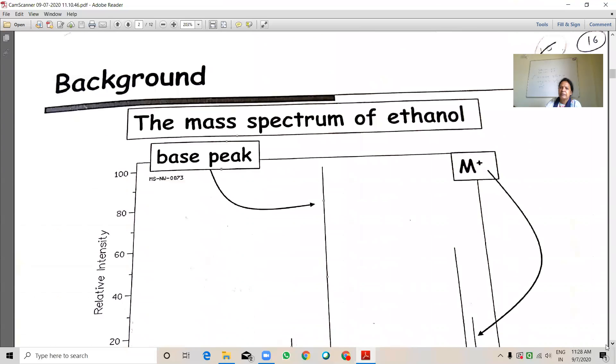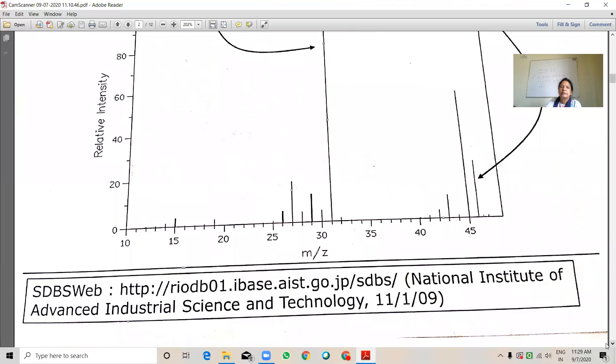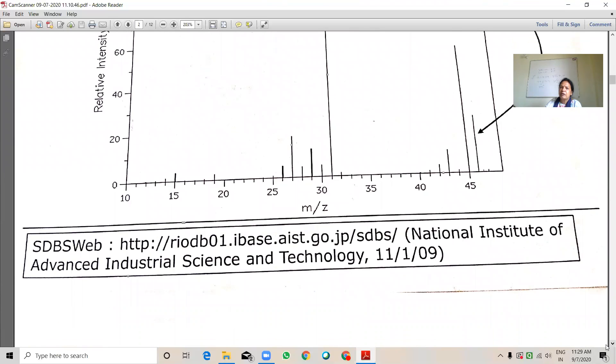See here, this is the spectrum of ethanol, base peak. M plus and it is about 31. So, this is due to the oxonium ion. And this peak is molecular mass and peak is low abundance peak. But this oxonium ion, CH2 double bond OH plus 31 is the prominent peak or base peak.